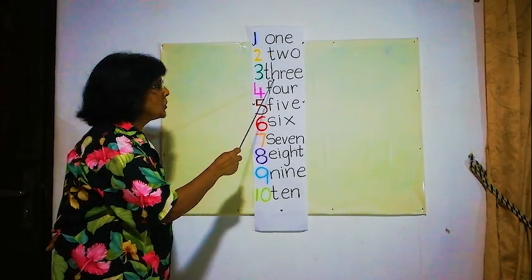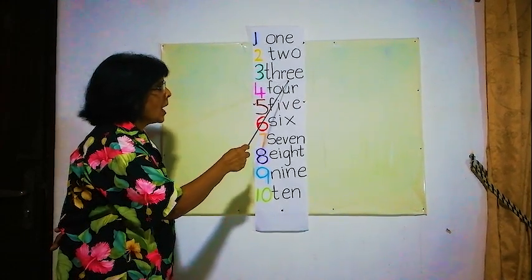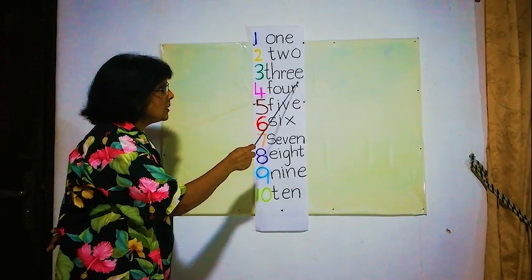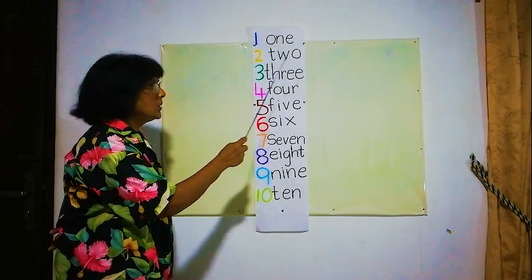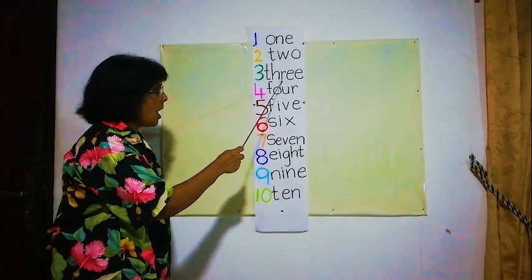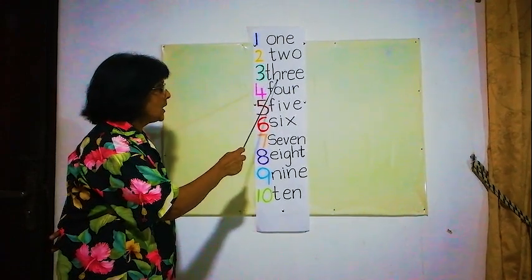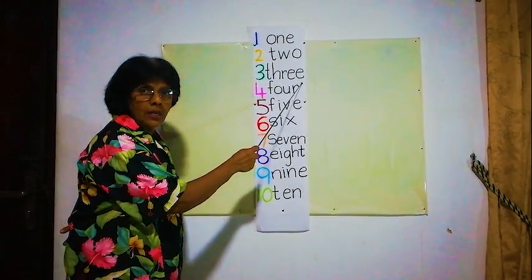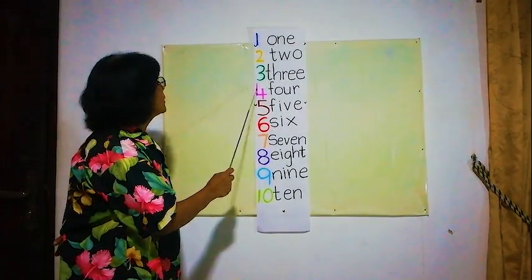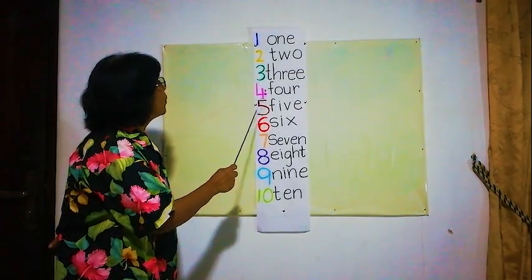Now here the next number 3. How do you spell 3? T, H, R, double E. E, E we call double E. T, H, R, double E, 3. T, H, R, double E, 3.